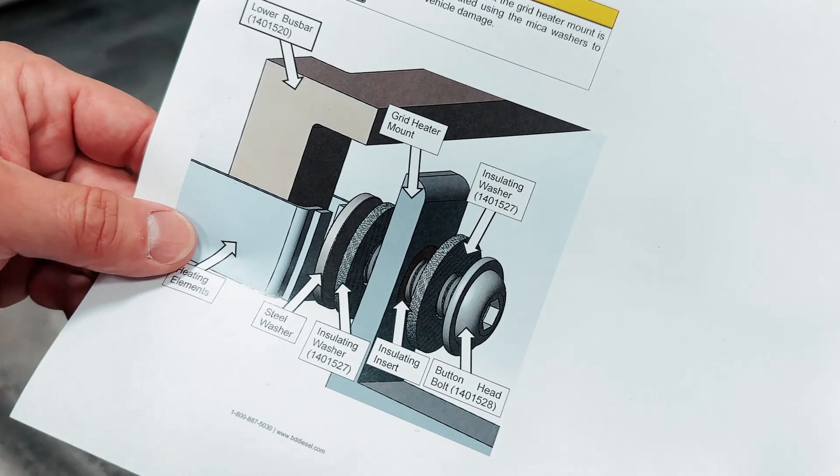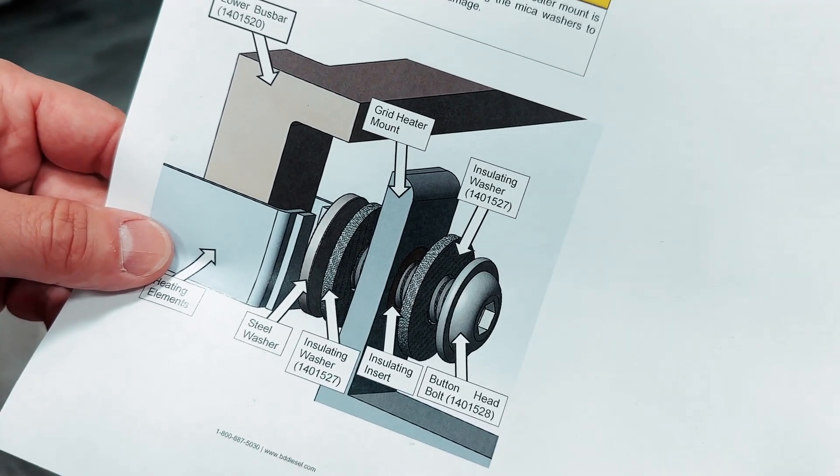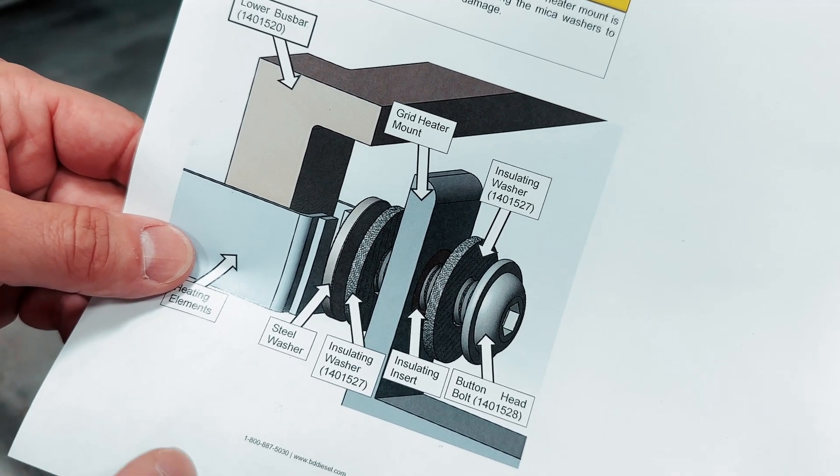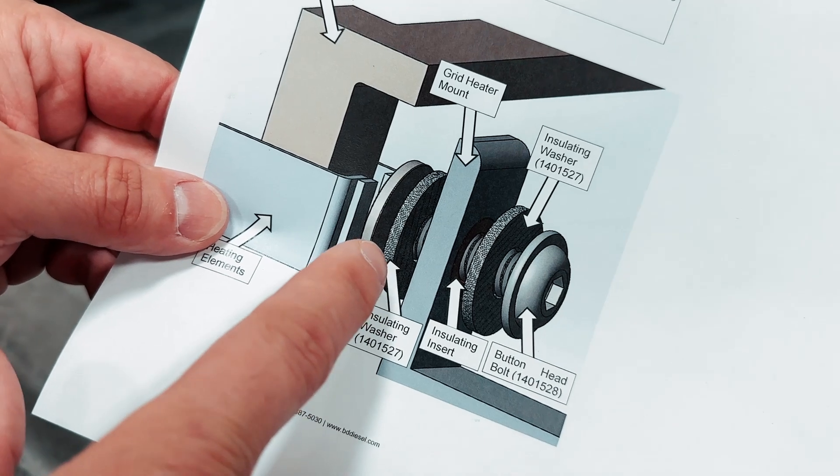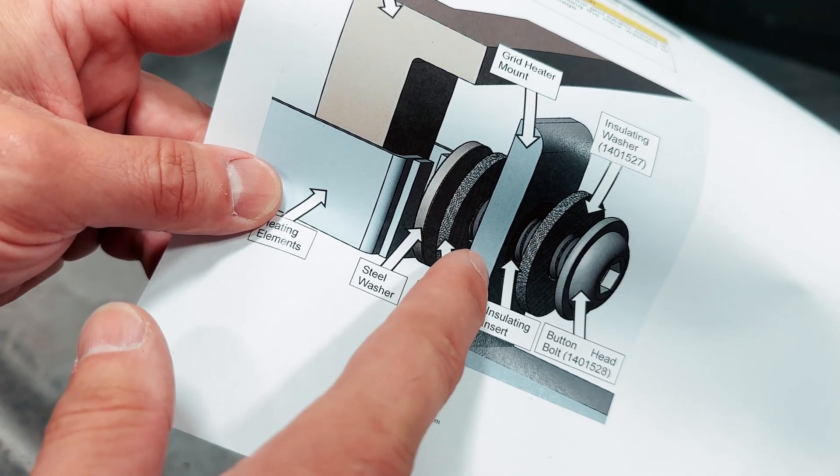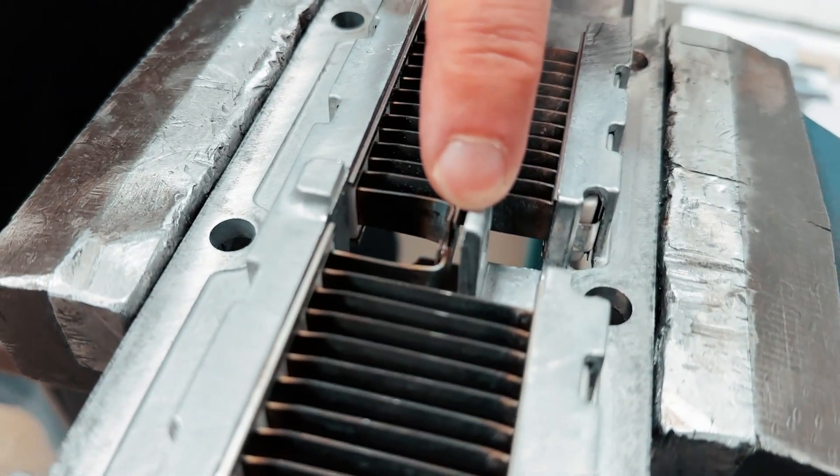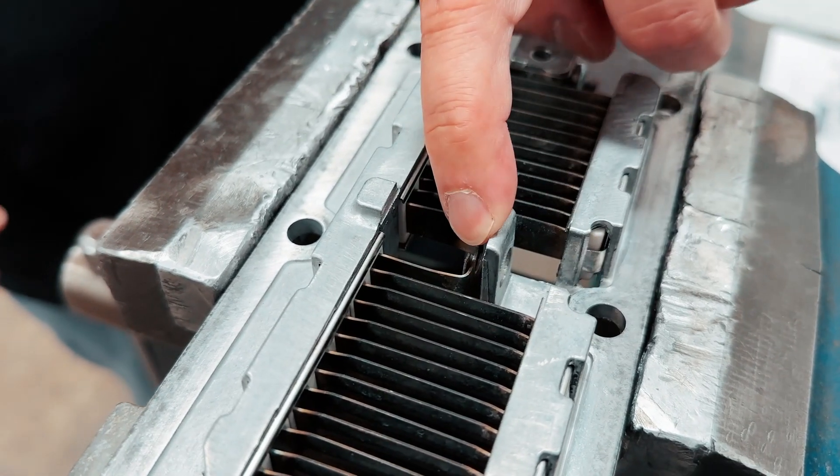In the manual, we have a blown up view. It's currently at the end of the manual. We're going to bump that up to the front just to make it a little bit easier. But the insulating washers need to go on either side of the intake mounting point. Now if we move over to this intake plate, I'll show you right here. That is this guy right here. We need the insulating washers on either side of that.